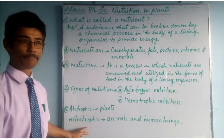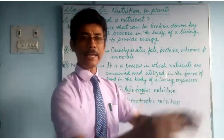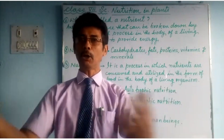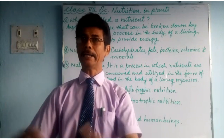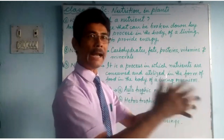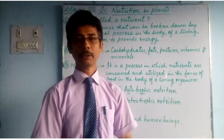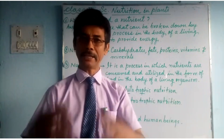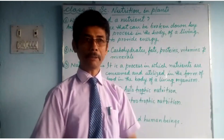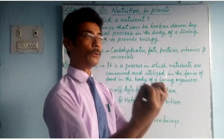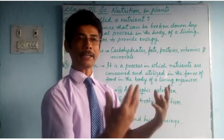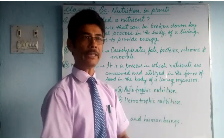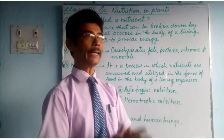Heterotrophic: excluding plants, all other living organisms are heterotrophic. They have to depend on plants — whether an insect, a human being, or an animal, they all have to depend on plants. So we are heterotrophic. Heterotrophic animals and human beings have to depend on plants.